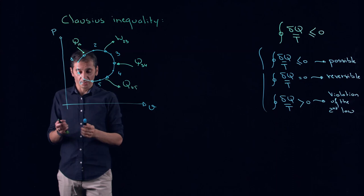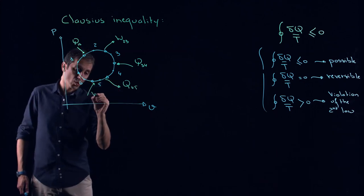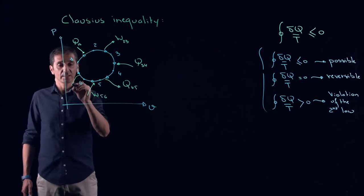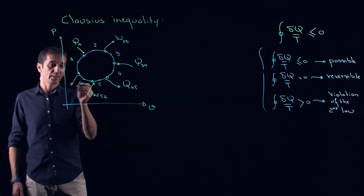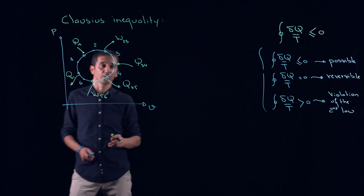Here, work is added. Work 5,6. And here also, let's say, heat is rejected, and let's call this Q6,1.